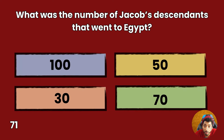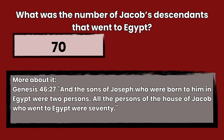Question 71: What was the number of Jacob's descendants that went to Egypt? 100, 50, 30, or 70? Answer: 70. Genesis 46:27 — And the sons of Joseph who were born to him in Egypt were two persons. All the persons of the house of Jacob who went to Egypt were 70.